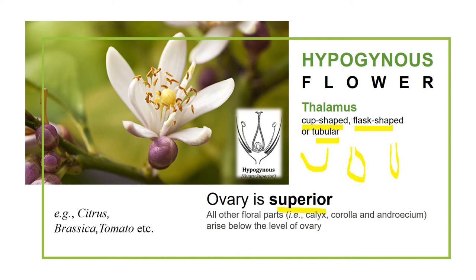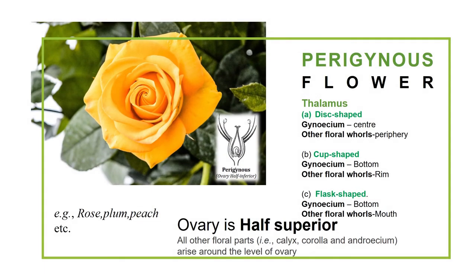All the other floral parts arise below the level of the ovary. From the picture you can see that the ovary is superior and the other floral parts arise below it. Examples of hypogynous flowers include citrus, brassica, and tomato.